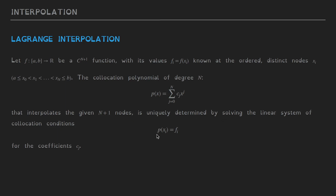This polynomial is unique and it can be determined by solving a linear system of collocation conditions. The conditions are p of xi equals fi. If we simply write down these conditions and substitute this expression, we will obtain a linear system for the coefficients ci or cj, and solving this system will give us the interpolating polynomial. This procedure is called the method of undetermined coefficients and we will do an example of this in Mathematica.